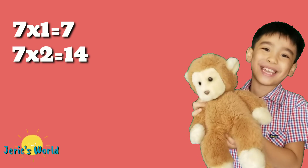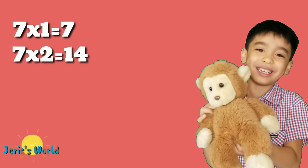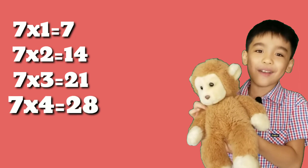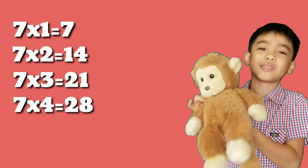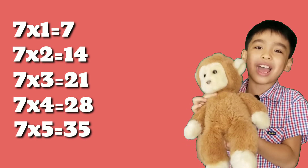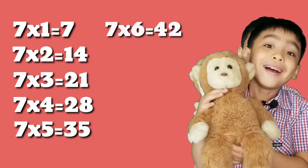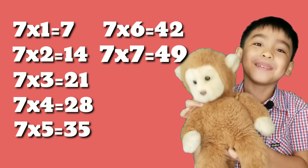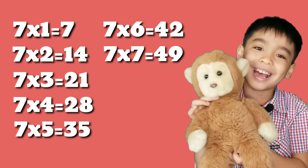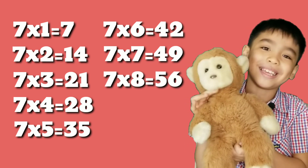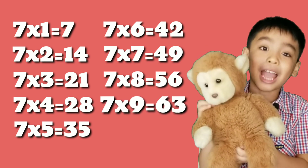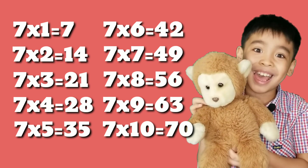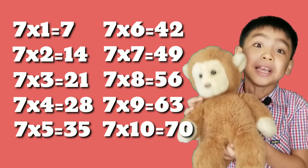Table of 7. 7 times 1 equals 7. 7 times 2 equals 14. 7 times 3 equals 21. 7 times 4 equals 28. 7 times 5 equals 35. 7 times 6 equals 42. 7 times 7 equals 49. 7 times 8 equals 56. 7 times 9 equals 63. 7 times 10 equals 70.